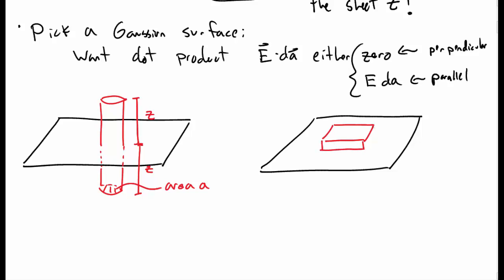You could also make a rectangular box here extending, again, above and below the plane, where the height above the plane is z, and there's some cross-sectional area A, and again, it also extends z below the plane. Either of these would work.